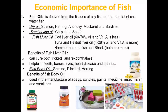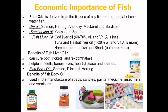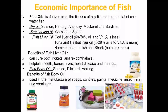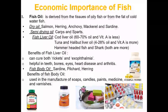Economic Importance of Fish: Fish oil is derived from the tissues of oily fish or from the fat of cold water fish. Dry oil is obtained from salmon, herring, anchovy, mackerel and sardine. Semi-drying oil is from carps and spars. Fish liver oil comes from cod liver oil, which contains 60–70% oil and lower vitamin A. Tuna and halibut liver oil contains 2–28% oil and higher vitamin A. Fish liver oil is also sourced from hammerhead fish and shark.